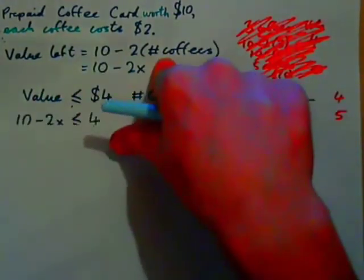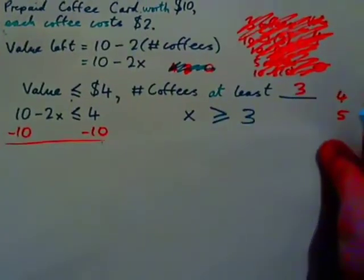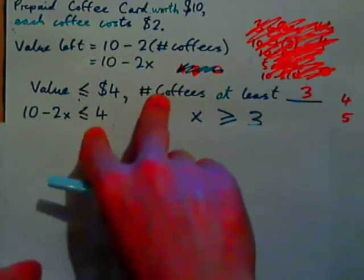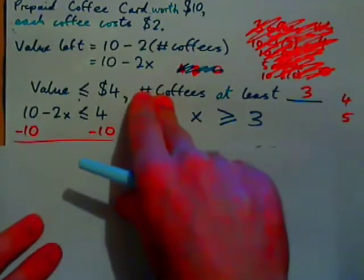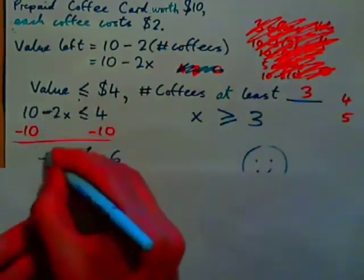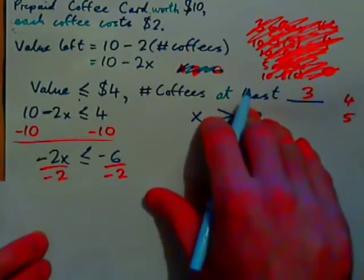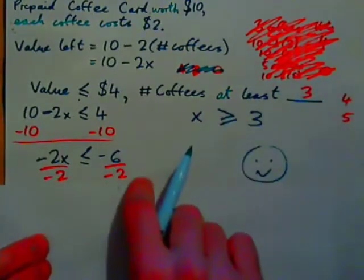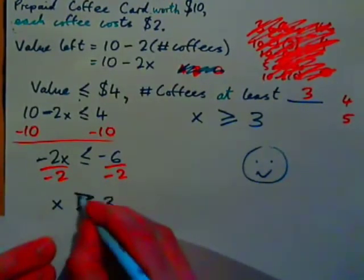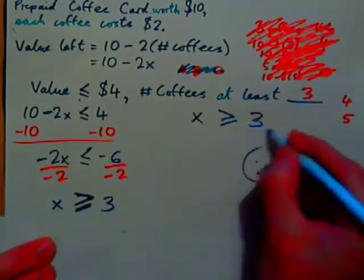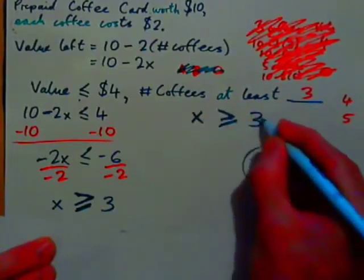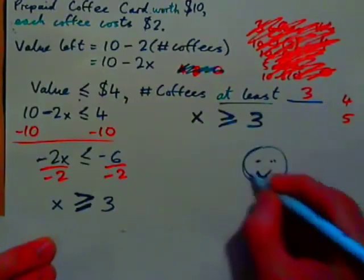Let's replace value with the expression 10 minus 2x and solve for when that is less than or equal to 4. Subtracting 10 from both sides gives negative 2x less than or equal to negative 6. Dividing both sides by negative 2 — and since we divide by a negative, we change direction — gives x greater than or equal to 3. The number of coffees must be at least 3, which matches our real-life answer.